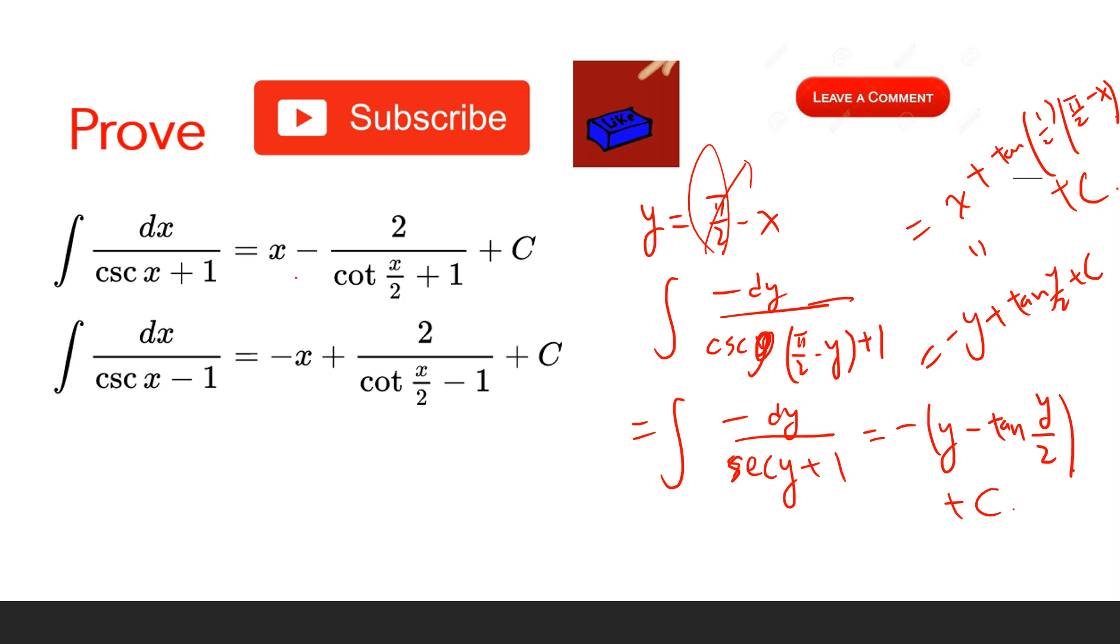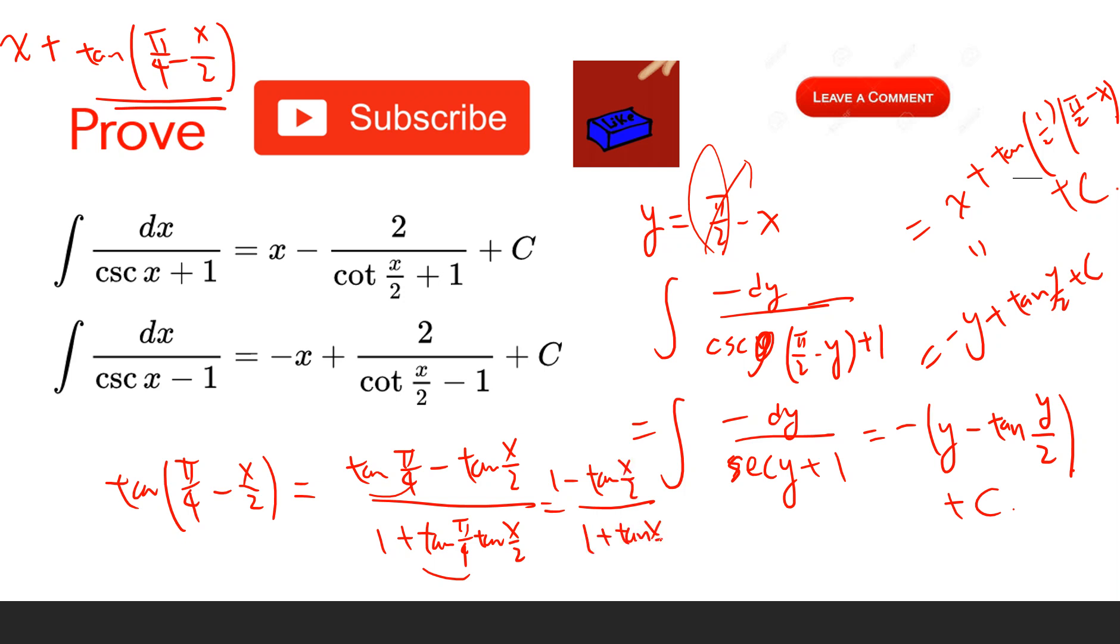So the final result is we need to compute x plus tan(π/4 minus x/2). Using the tangent subtraction formula: tan(π/4) minus tan(x/2) divided by 1 plus tan(π/4) tan(x/2). Since tan(π/4) equals 1, this becomes 1 minus tan(x/2) over 1 plus tan(x/2).